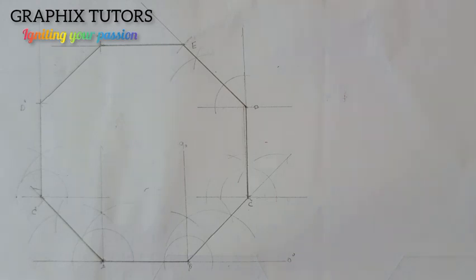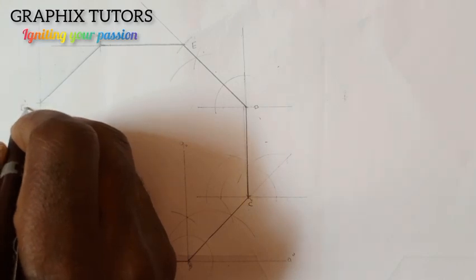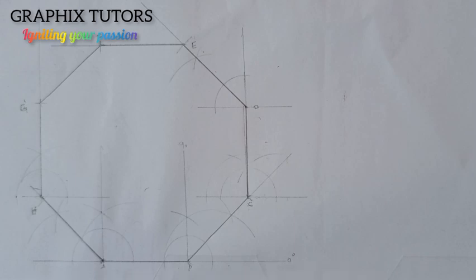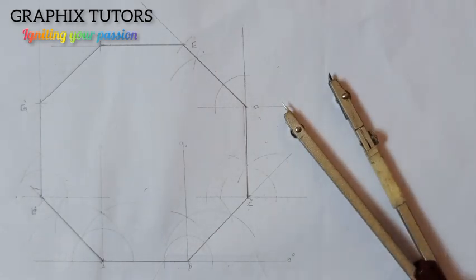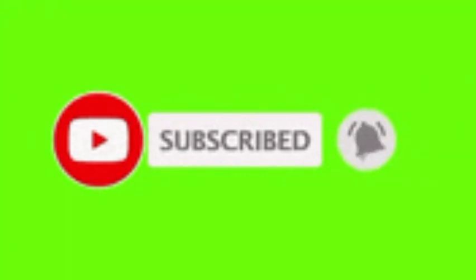Now I can simply join this point to this point. What I've successfully constructed is an octagon having eight sides: A, B, C, D, E, F, G, H, back to A. This is how you construct an octagon using just your compass. If you find this video helpful, please don't forget to click on the subscribe button. Thanks for watching.